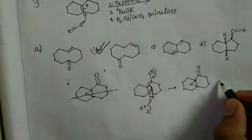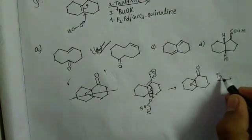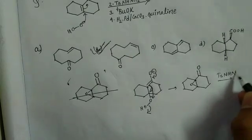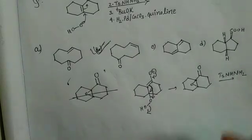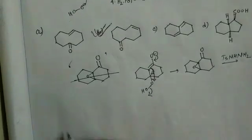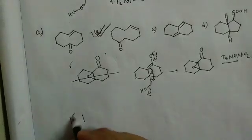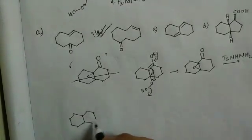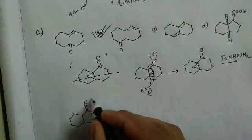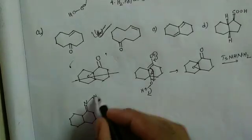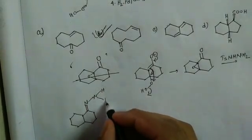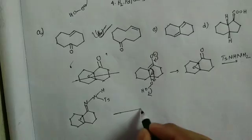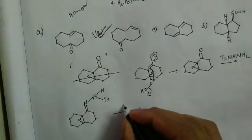In the second step, tosyl hydrazine (TsNHNH₂) reacts with the ketone to form a tosyl hydrazone. You will have this hydrazone derivative, showing the -N-NHTs group attached to the carbon, with the epoxide still present.